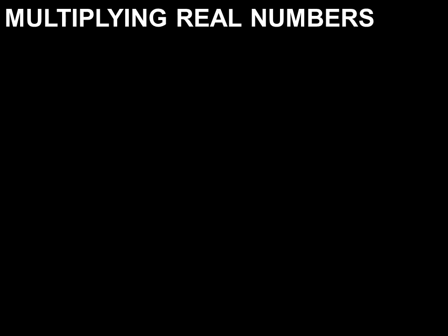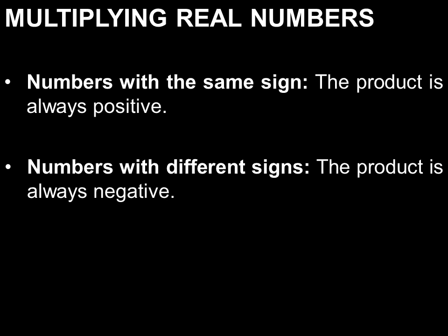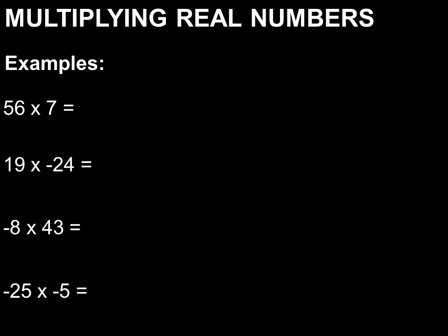Let's go to multiplying real numbers. Numbers with the same sign have a product which is always positive, and numbers with different signs have a product which is always negative. Let's take these examples. 56 times 7 is equal to 392. Next would be 19 times negative 24, which is negative 456, since they have unlike signs.